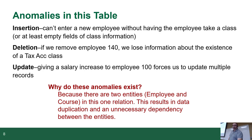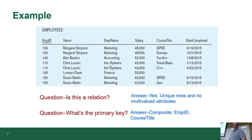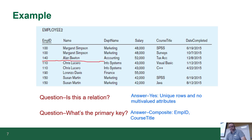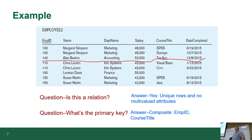A deletion anomaly: if we look at employee 140, which is Alan Beaton, and we fire Alan and delete him from the database, we're going to lose the fact that the tax accounting course ever existed. If you look up and down the course title list, tax accounting doesn't exist anywhere else. So if we delete Alan Beaton, we lose the fact that that course ever existed. It's gone — there's no proof it ever existed.